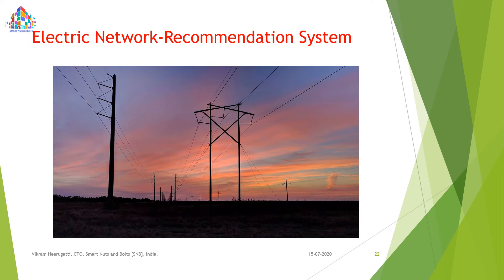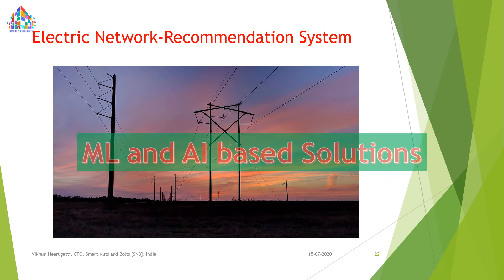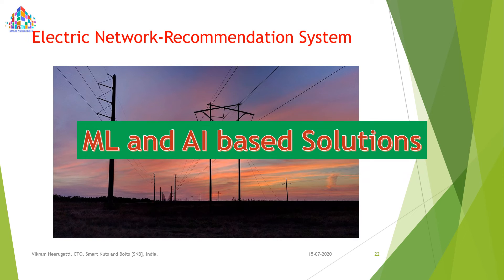Next is the electric network recommendation system. In apartments or large factories we have electrical networks, and often we encounter a lot of troubles. With the help of AI and machine learning algorithms, based on the detected problem, it will automatically suggest solutions. This is the key feature of this patent.